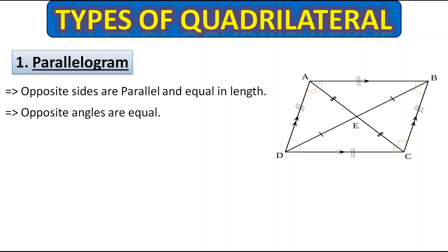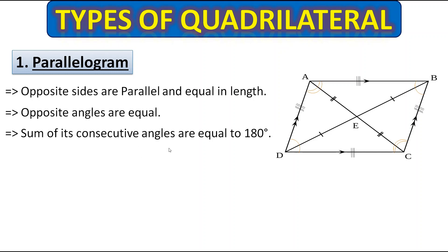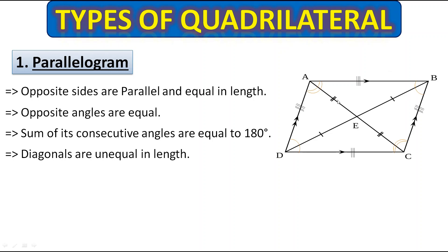The next property is opposite angles are equal — this angle and that angle are equal, and the other pair of opposite angles are also equal. Next, the sum of consecutive angles equals 180 degrees. Consecutive means side by side, so this angle and this angle add up to 180 degrees. Next, diagonals are unequal in length — these two diagonals are unequal in length.